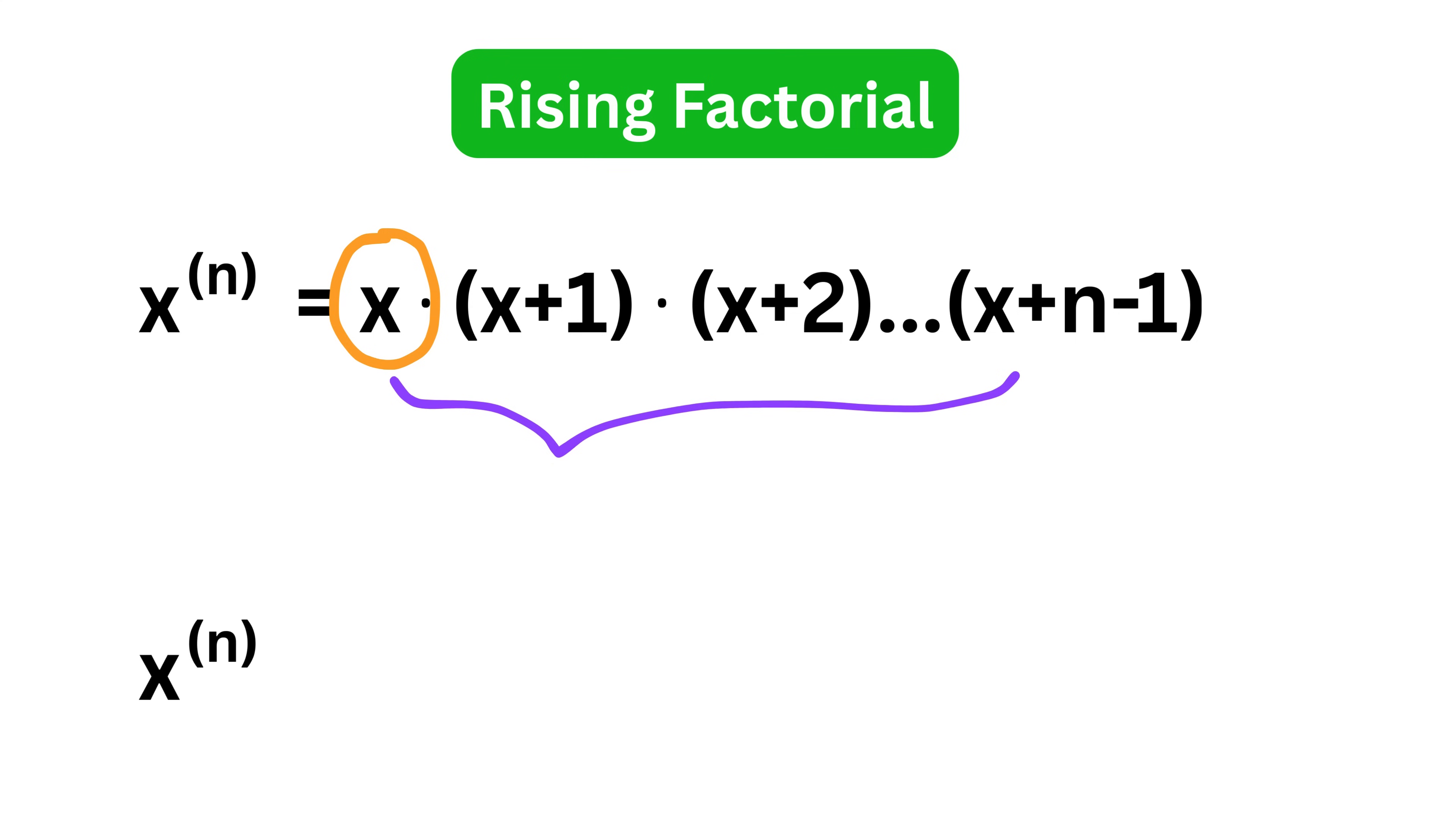For example, if we take the rising factorial of 3 with subscript 4, it will be 3 times 4 times 5 times 6. It is called rising because the numbers keep increasing in each step.